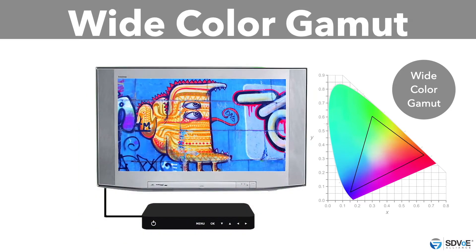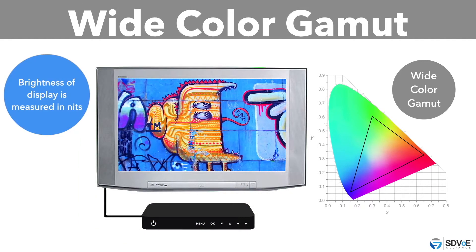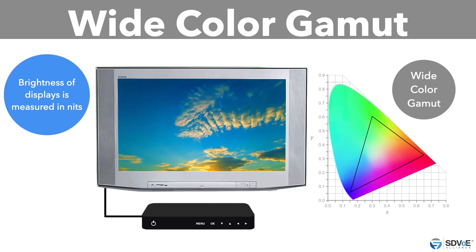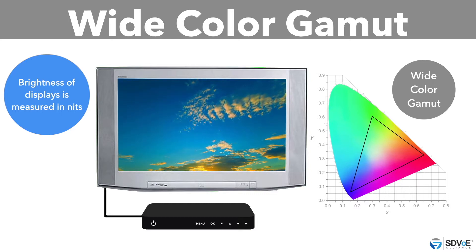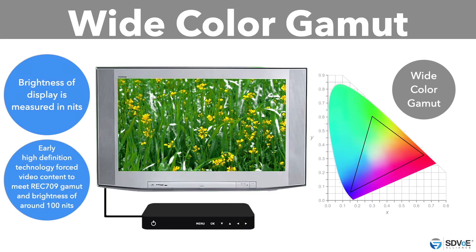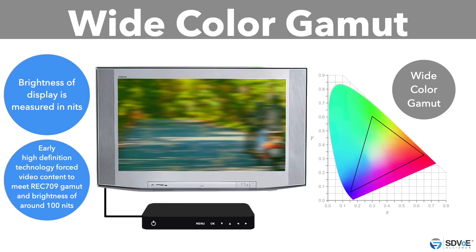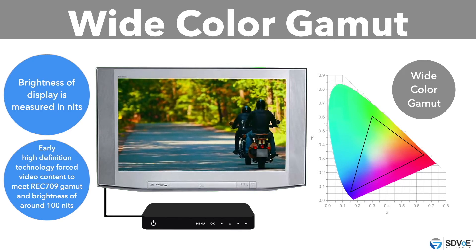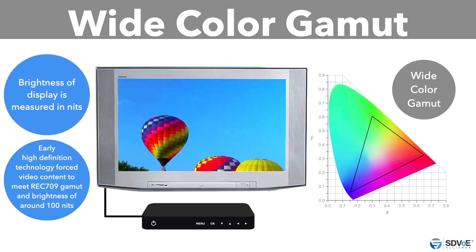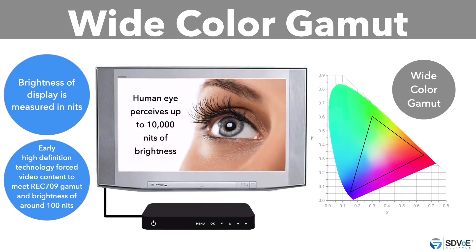The brightness of a display is measured in nits. When the technical wizards of yesterday went to work making HDR as effective as possible, the standard definition technology available forced video content to be produced to meet the requirements of typical CRT TVs, using the Rec. 709 color gamut and a brightness of around 100 nits. Contrast this to the human eye, which can perceive up to 10,000 nits of brightness.